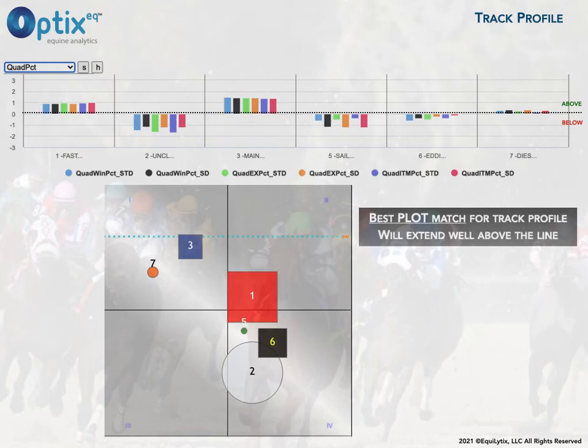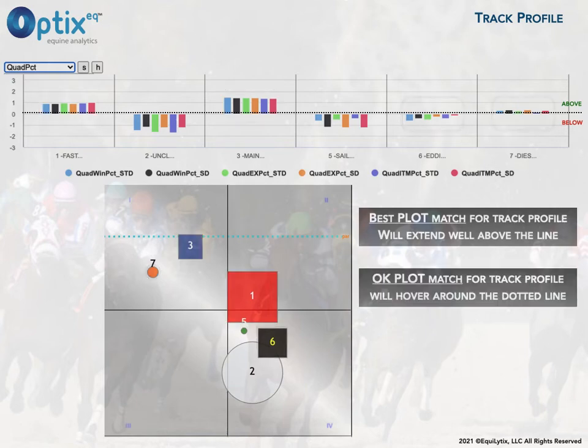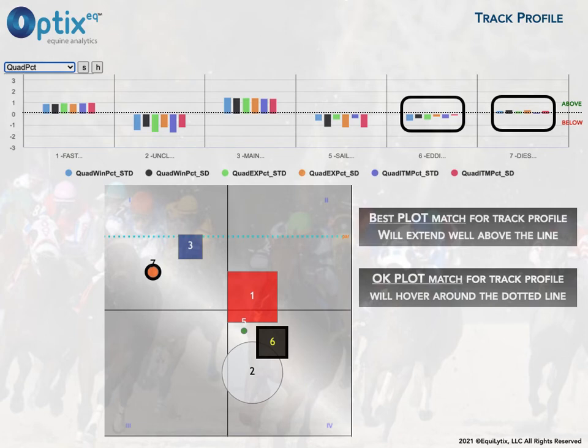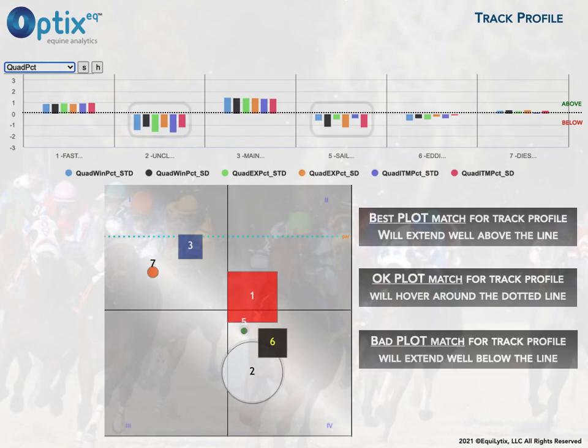Horses six and seven are pretty neutral — they kind of hover around that zero. So it's neither bad nor good; it's kind of neutral. It's just one way to look at it.